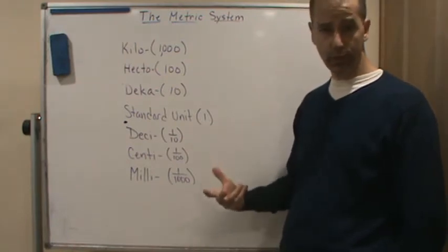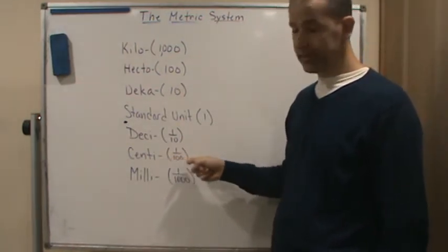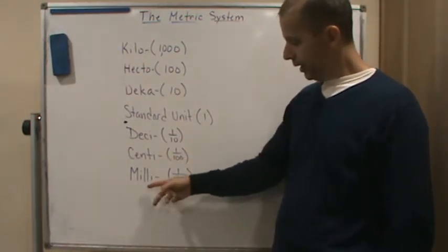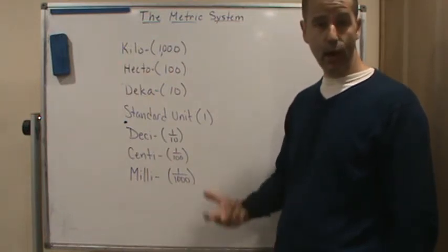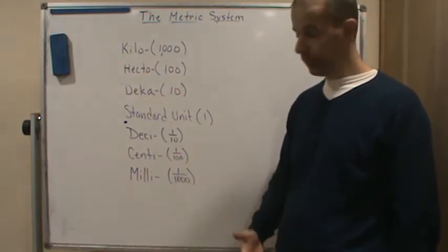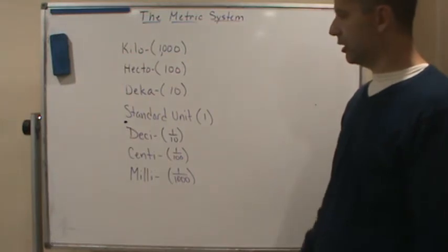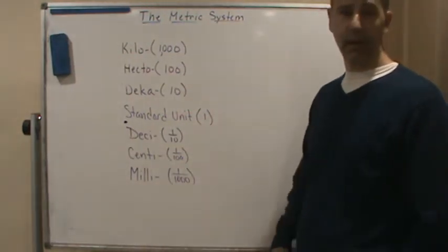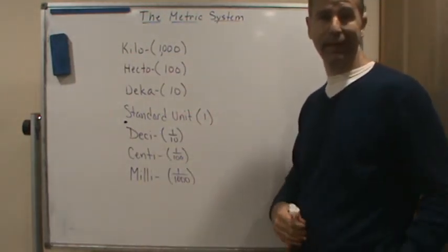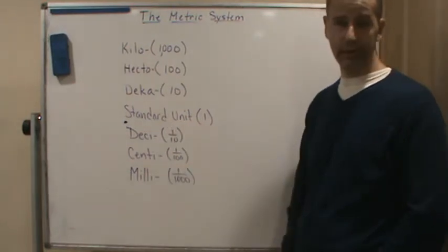If I'm talking about one one-hundredth of a gram, that's a centigram. And then a milligram is one one-thousandth of a gram. And so these are the most common prefixes that we can attach to the standard unit to tell us what we're dealing with.